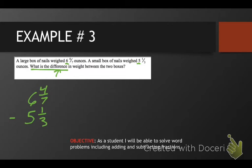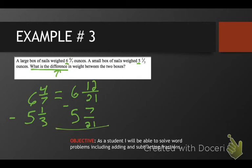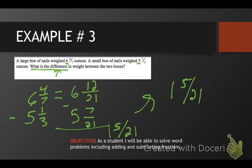This is just like the other one — the common denominator is going to be twenty-one. How does seven become twenty-one? Multiply by three — four times three is twelve. How does three become twenty-one? Multiply by seven — one times seven is seven. Don't forget our whole number. We are subtracting this time. It looks like we're not going to have to borrow, which is completely awesome. Twelve minus seven gives us five over twenty-one, and six minus five is one. Our answer is one and five twenty-firsts. We need a label — it says what is the difference in weight, so the weight is in ounces: one and five twenty-first ounces.